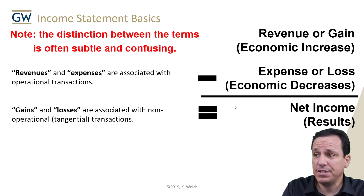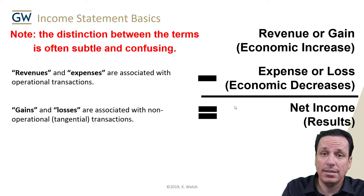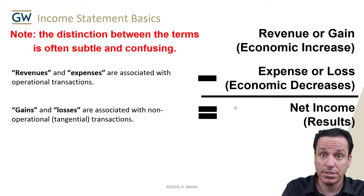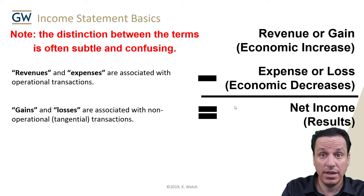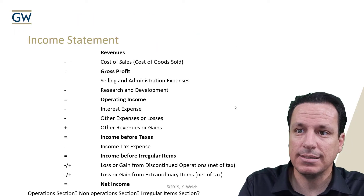You need to ask yourself: is this part of the normal business operation? The net difference from all of those is our net income. What's it net of? It's your revenues minus all the expenses and losses — revenues and gains minus expenses and losses. The net increases minus the net decreases. That's what net income is.